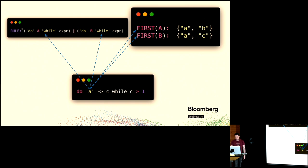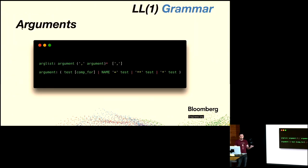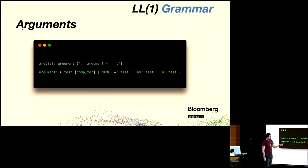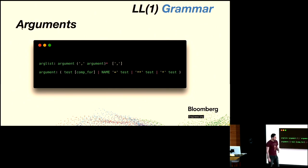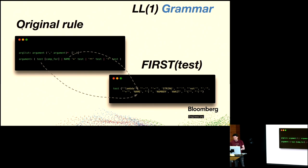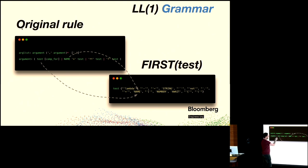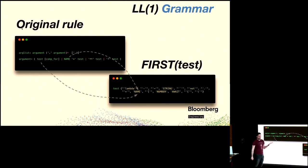This ambiguity problem actually occurs in CPython. For example, the rule for calling functions has an 'argument' sub-rule. The argument rule includes a plain test object and a keyword argument like 'name=object'. But since 'test' can also start with 'name', these two alternatives are ambiguous — you don't know whether a name should be parsed as a plain argument or the beginning of a keyword argument. So this rule is not actually valid as written.